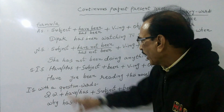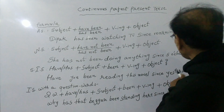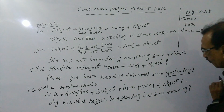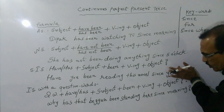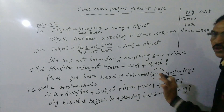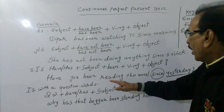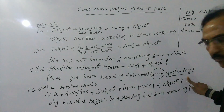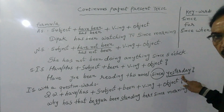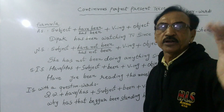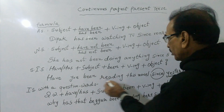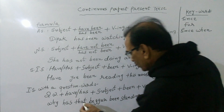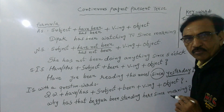Now the third one is interrogative: 'Have you been reading this novel since yesterday?' Don't get confused by the word 'yesterday' — when it is accompanied with the word 'since,' simply bear in mind it is 'since,' and this is continuous perfect present tense. That means we want to ask: your friend may have started reading this novel yesterday, at present he is reading, and he may continue reading till the moment he completes it. The last sentence, interrogative with a question word: 'Why has that beggar been standing here since morning?'